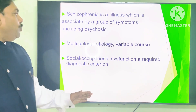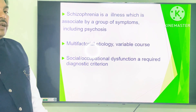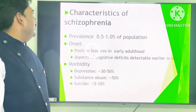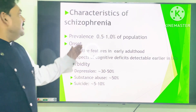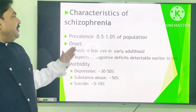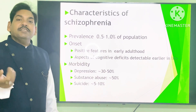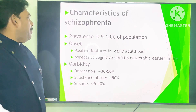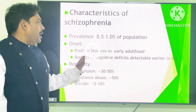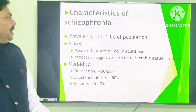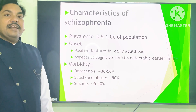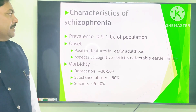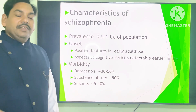Social and economic dysfunctions are required for the diagnosis criteria characteristic of schizophrenia. The prevalence is very low — 0.5 to 1 percent of the population. The peak onset is in early adulthood, and cognitive deficits may be detectable earlier in life.